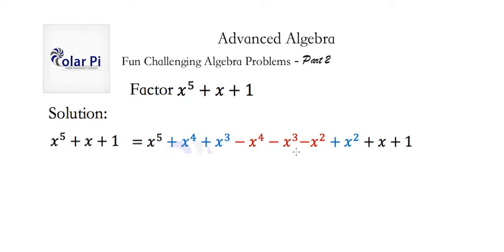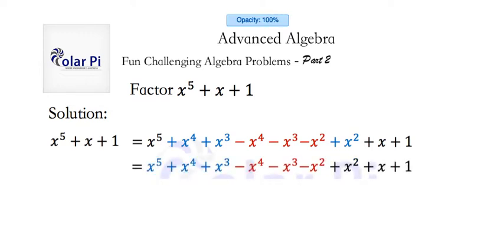Now, with the terms written as they are, I have a slightly different color coding in my next step. So, I've color coded the first three terms in blue, and then the next three in red, and then the last three in black. I like this grouping because we can factor out something from each group.